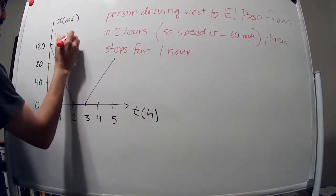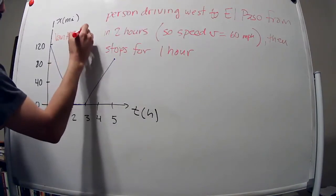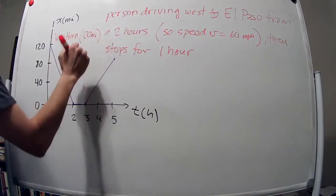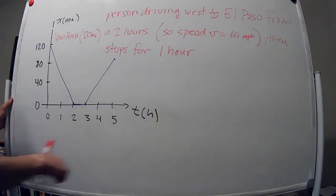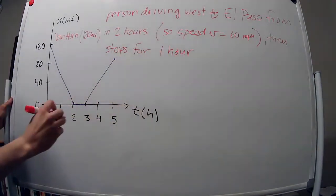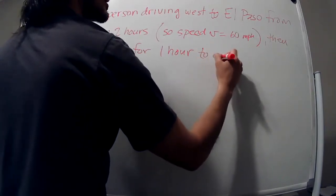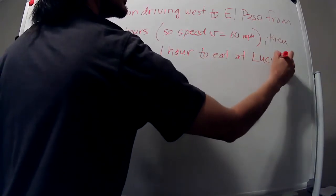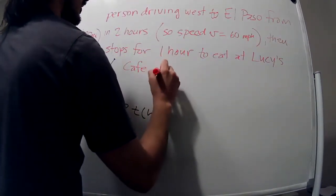So let's say that person is driving west to El Paso from Van Horn, 120 miles in two hours, so at 60 miles per hour. Then stops for one hour to eat at Lucy's Cafe on Mesa.